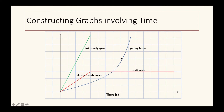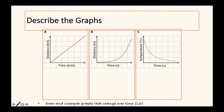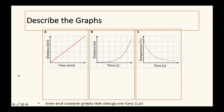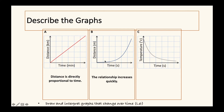A line that starts off fairly slow and then gets faster and faster shows dramatic speed increase. Looking at three different graph types: on a distance-time graph, distance is on the vertical y-axis and time is on the horizontal x-axis. A straight diagonal line through the middle usually means distance and time are directly proportional - you're going the same distance every minute.